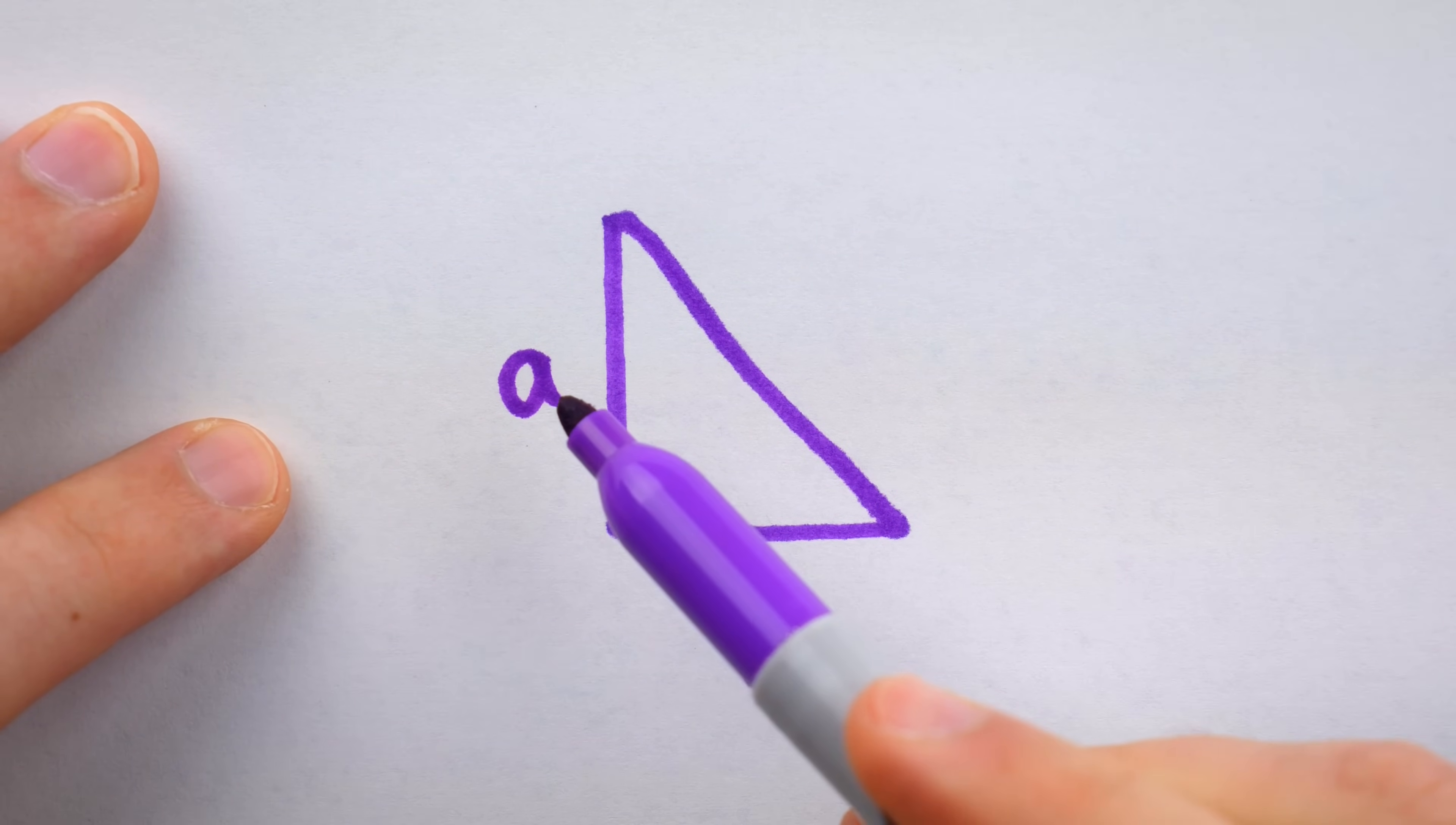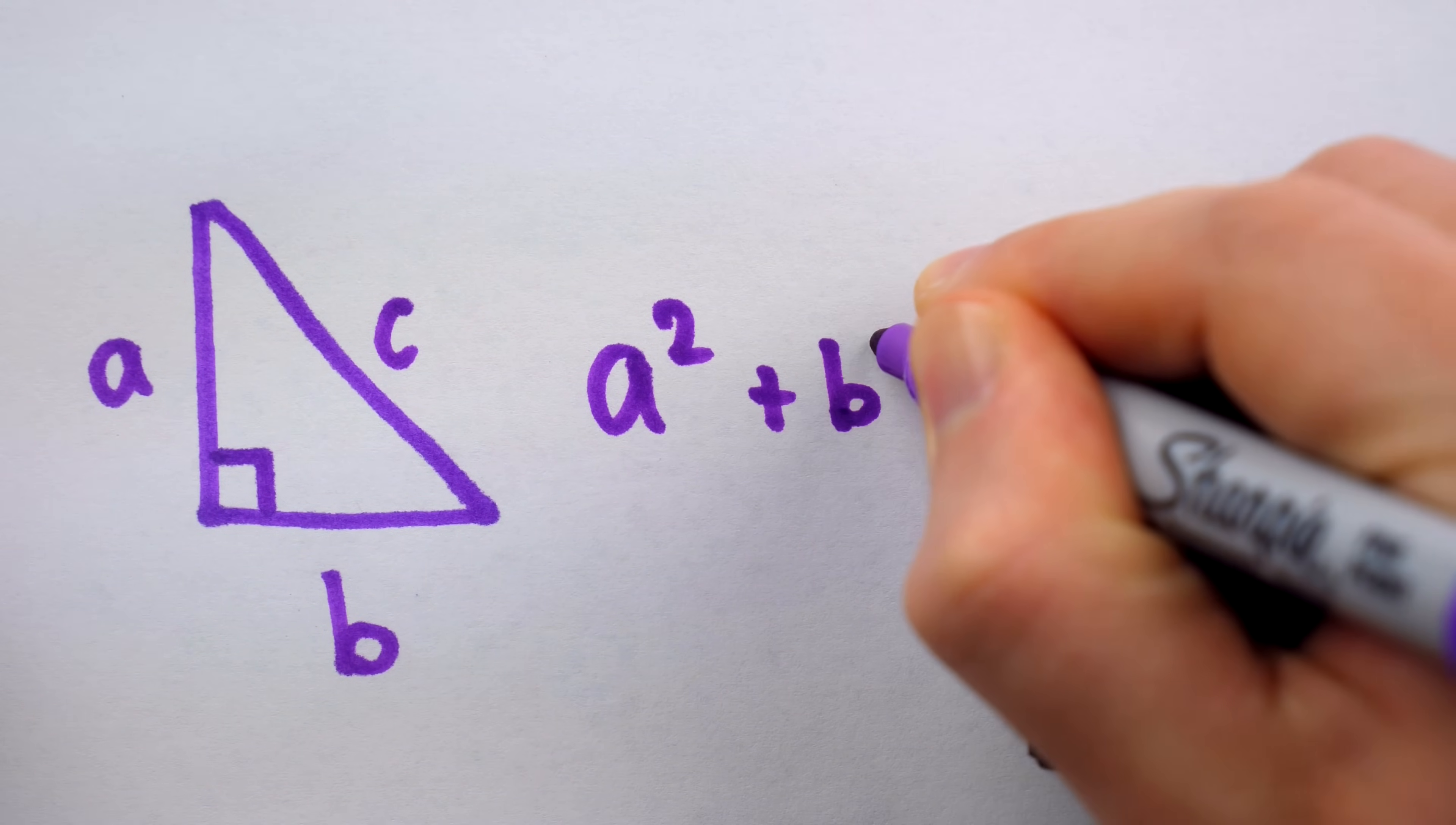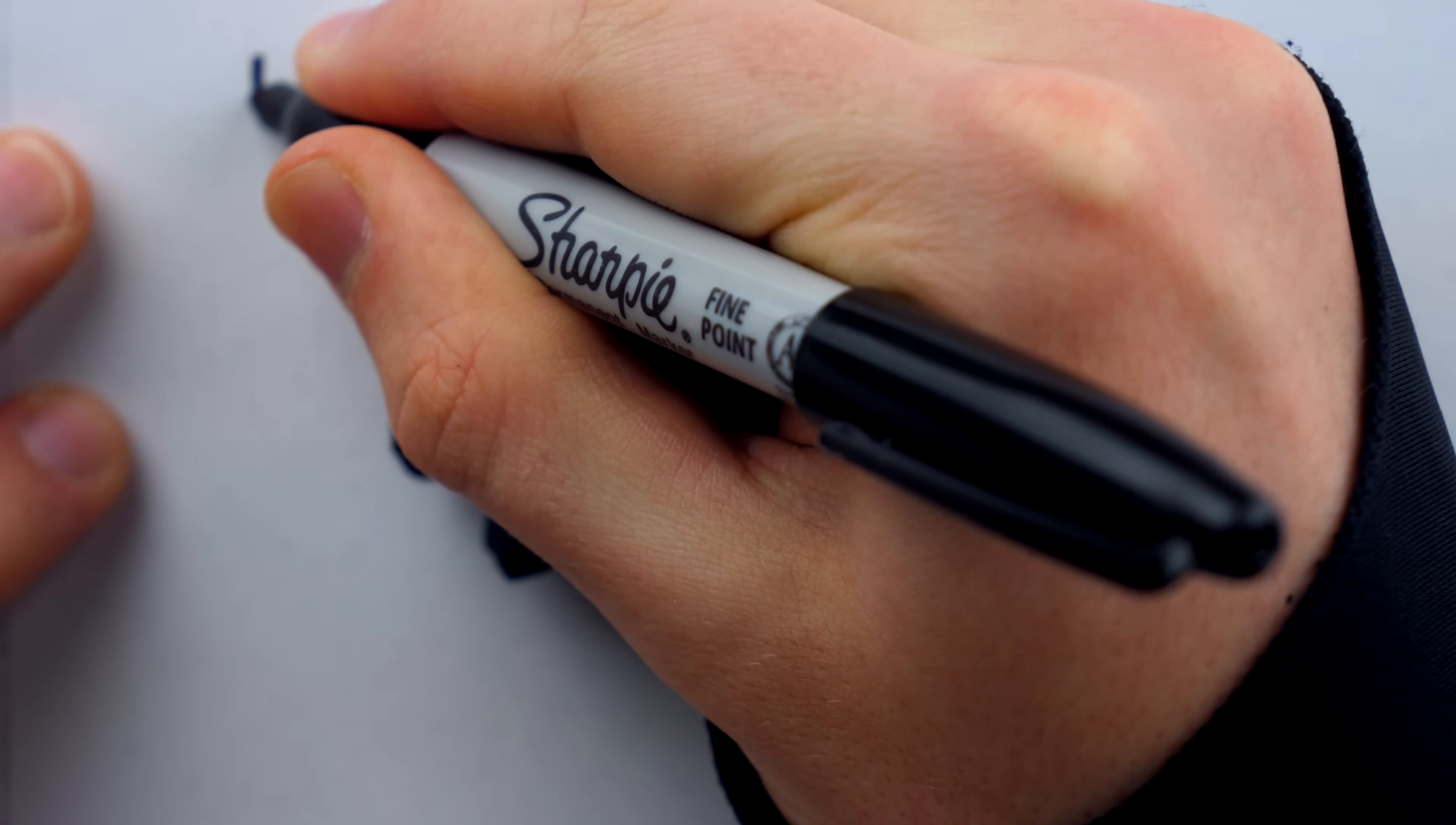The Pythagorean theorem tells us that if A and B are the legs of a right triangle and C is the hypotenuse, then A squared plus B squared equals C squared. Now, what your teacher probably didn't tell you is that the Pythagorean theorem is mid, and I'm going to prove it to you.